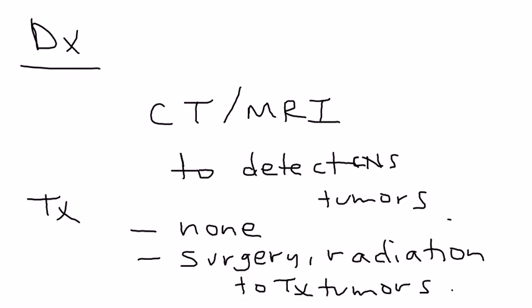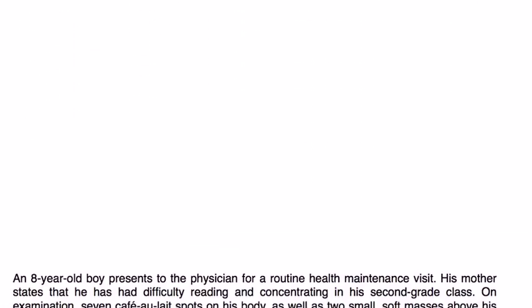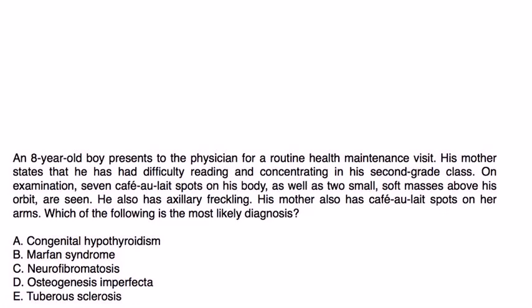Let's look at a clinical vignette: An 8-year-old boy with difficulty reading presents with seven cafe au lait spots on his body and two small soft masses above his orbit. He has axillary freckling, and his mother also has cafe au lait spots. The most likely diagnosis is neurofibromatosis, as this buzzword tends to only be associated with this condition.